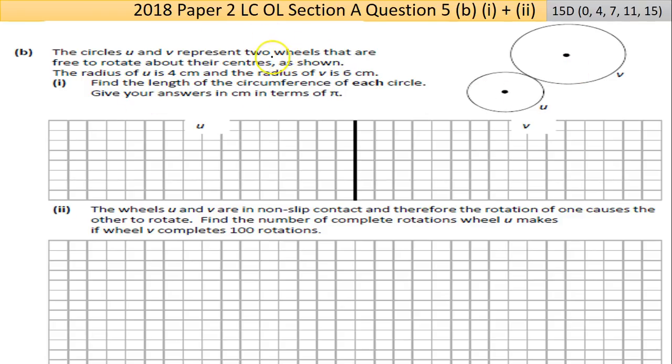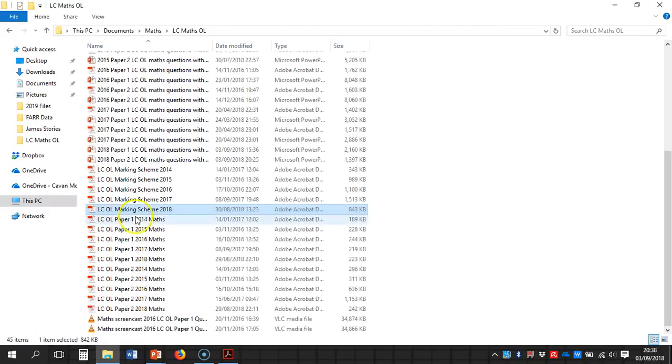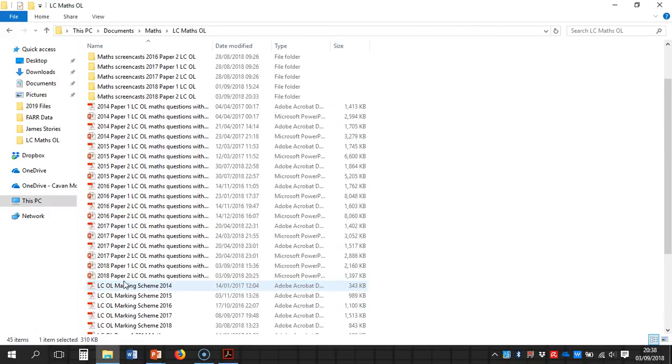The circles u and v—so we have two circles touching. The smaller one is u, the bigger one is v—represent two wheels that are free to rotate about their centers as shown. The radius of u is 4 centimeters. The radius of v is 6 centimeters. So I'm going to draw them on. That's 4 and that's 6. Probably not enough to get you a partial, but might. Most students make a stab at this, although a lot found the area not the circumference.